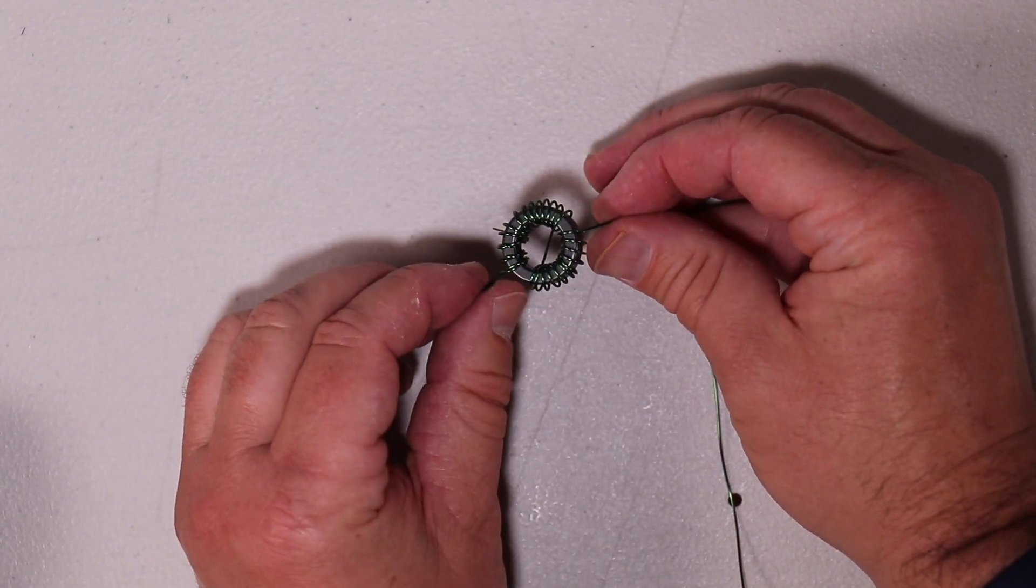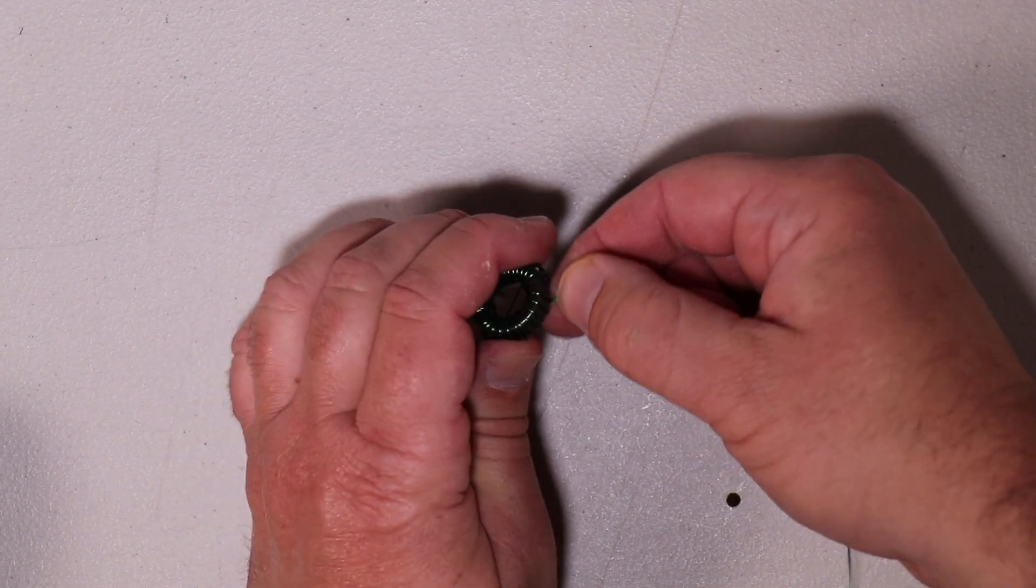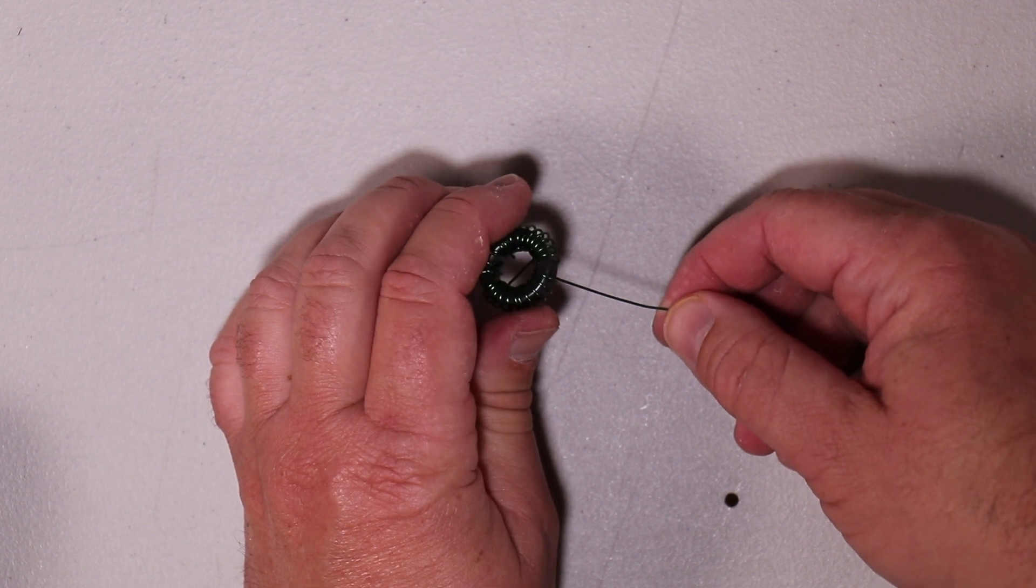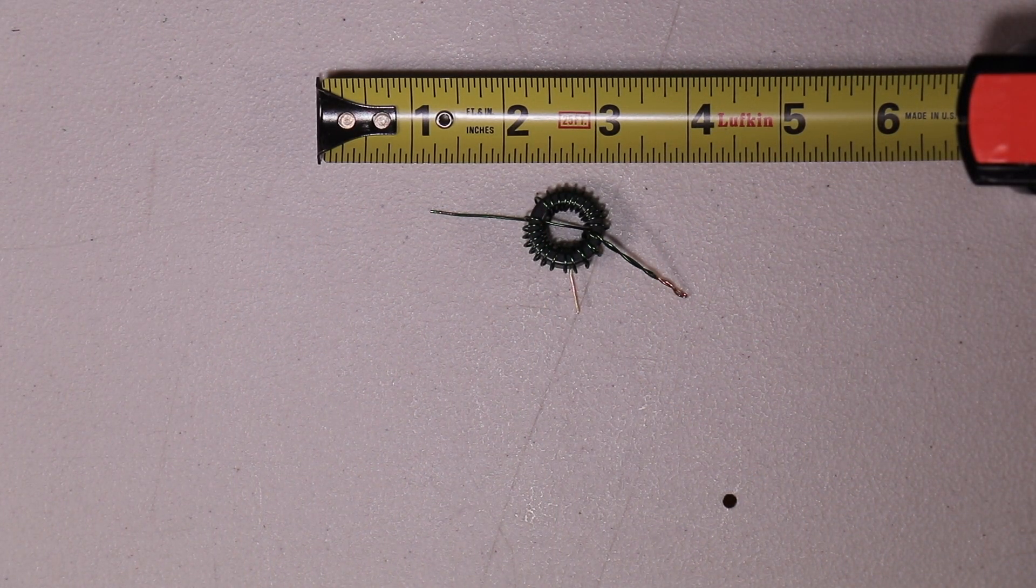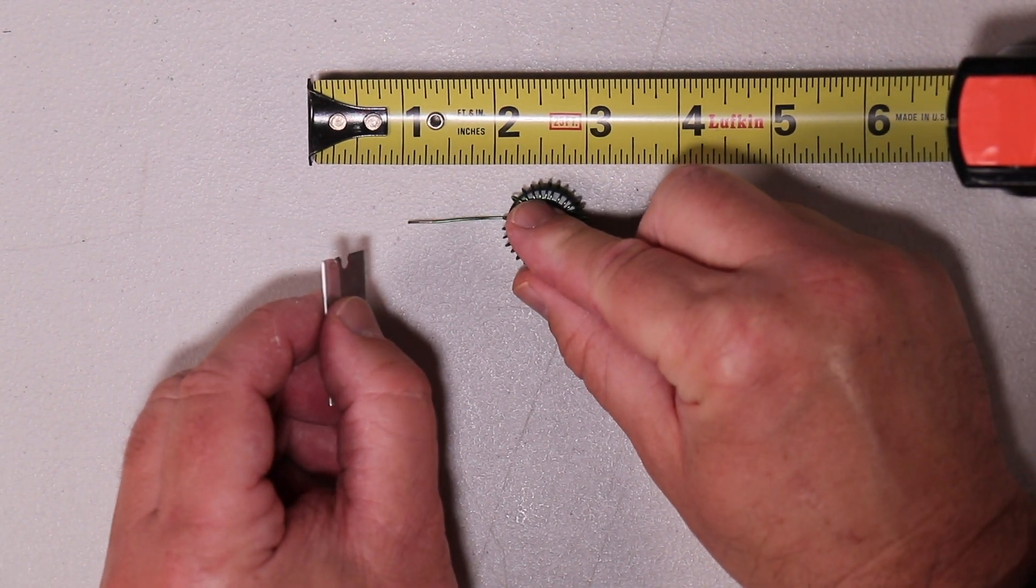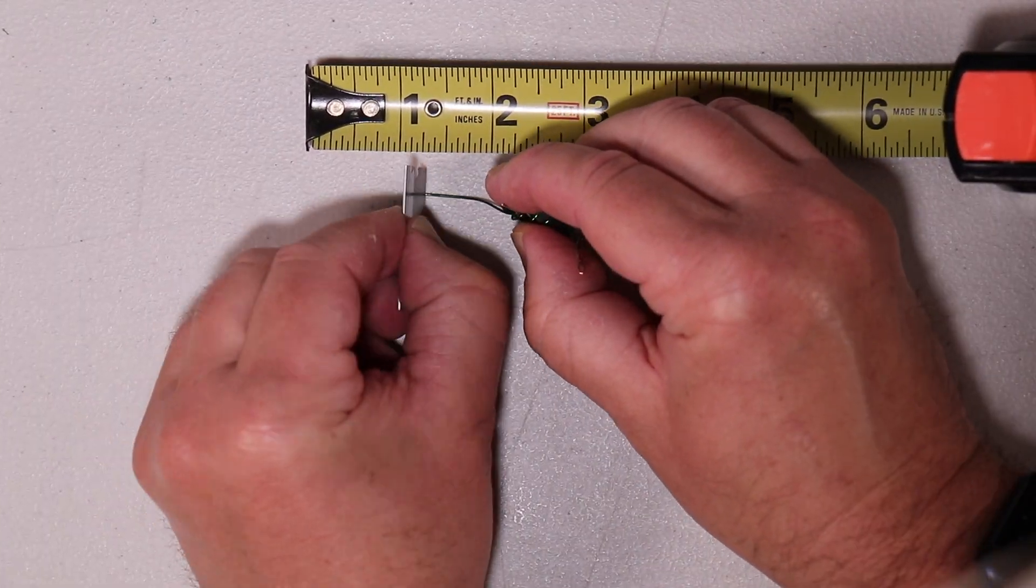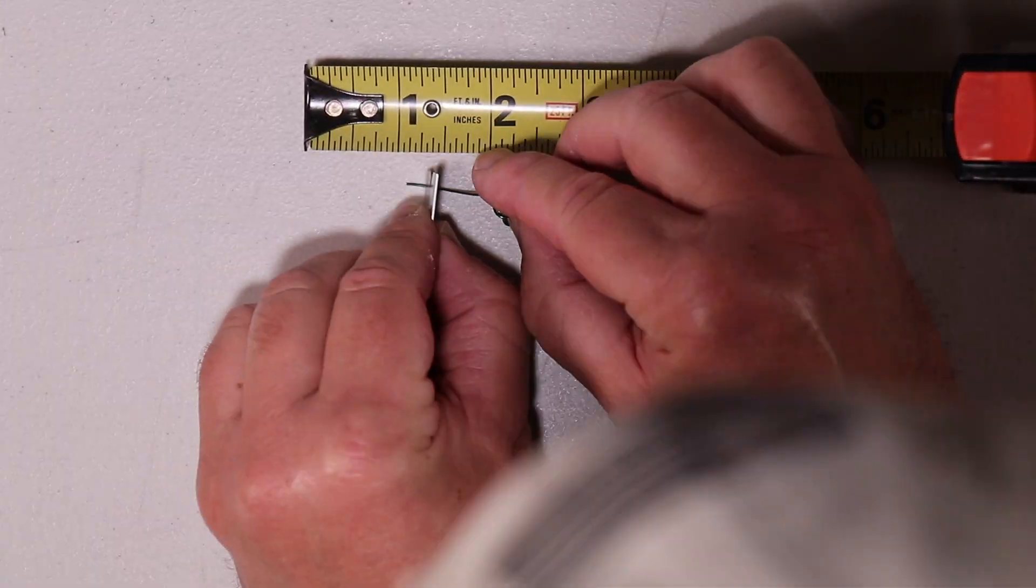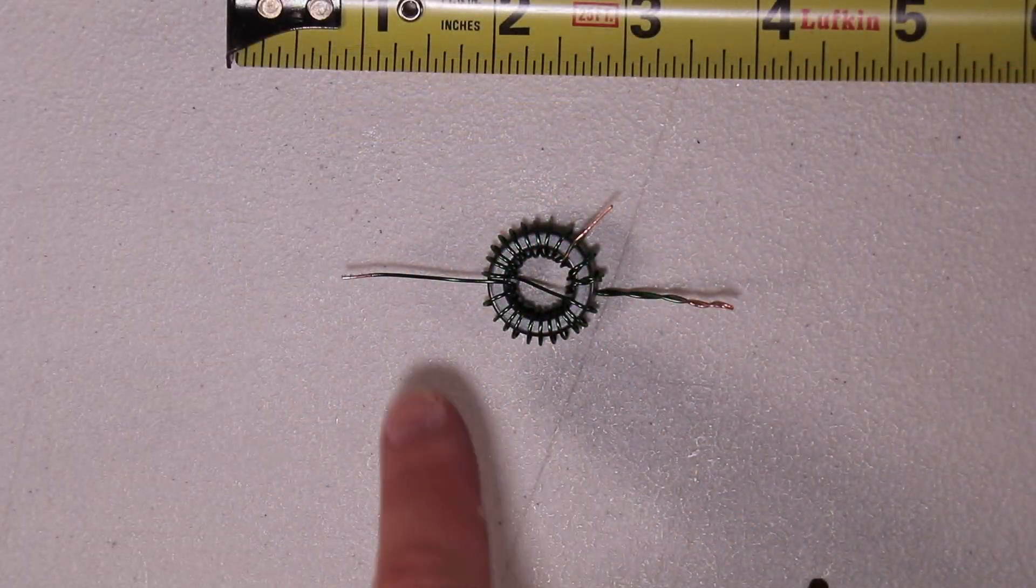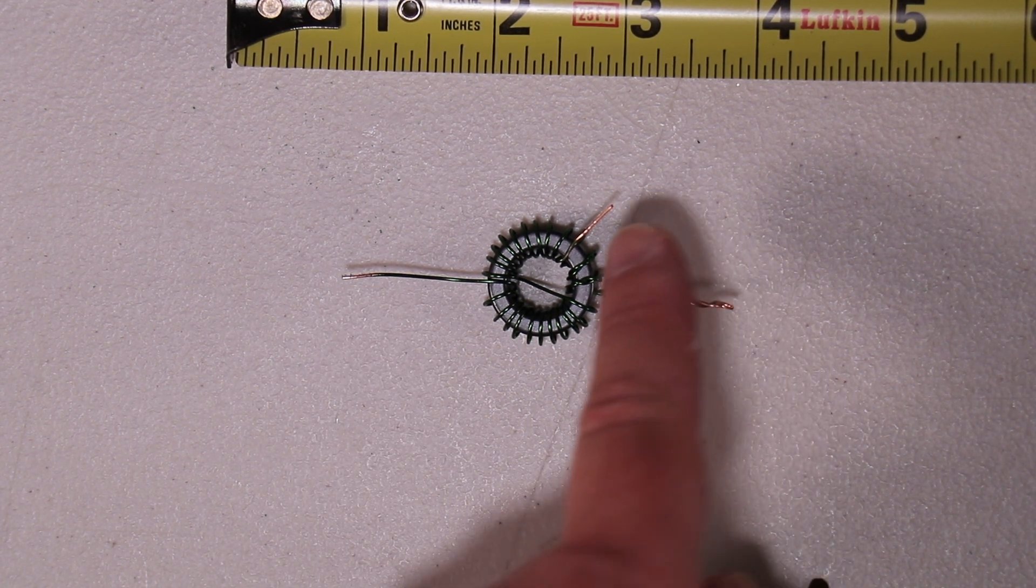And now you have your 24 wraps. And now we're going to cut this off until we have one inch and then we're going to scrape a quarter inch of the enamel off. Okay once you've got that last end cut down to about an inch and a quarter inch of the insulation taken off you're going to tin the three ends.